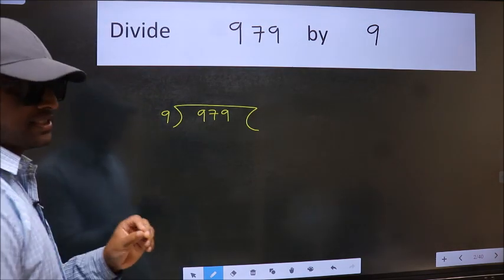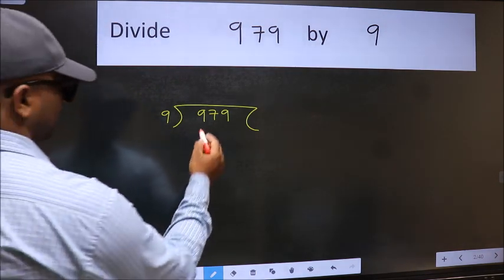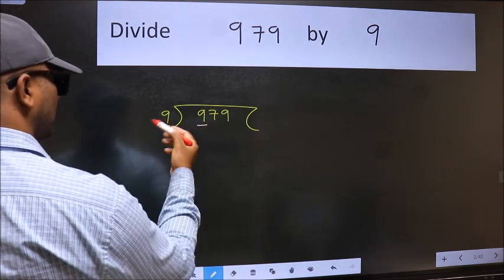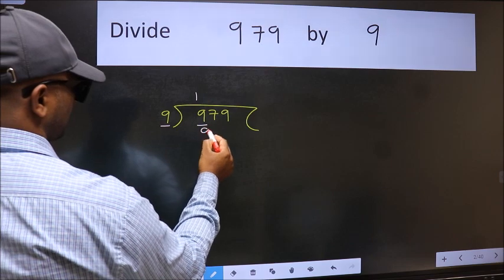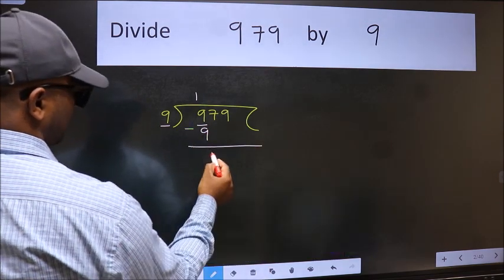This is your step 1. Next, here we have 9 and here 9. When do we get 9 in the 9 table? 9 times 1 is 9. Now we should subtract. We get 0.